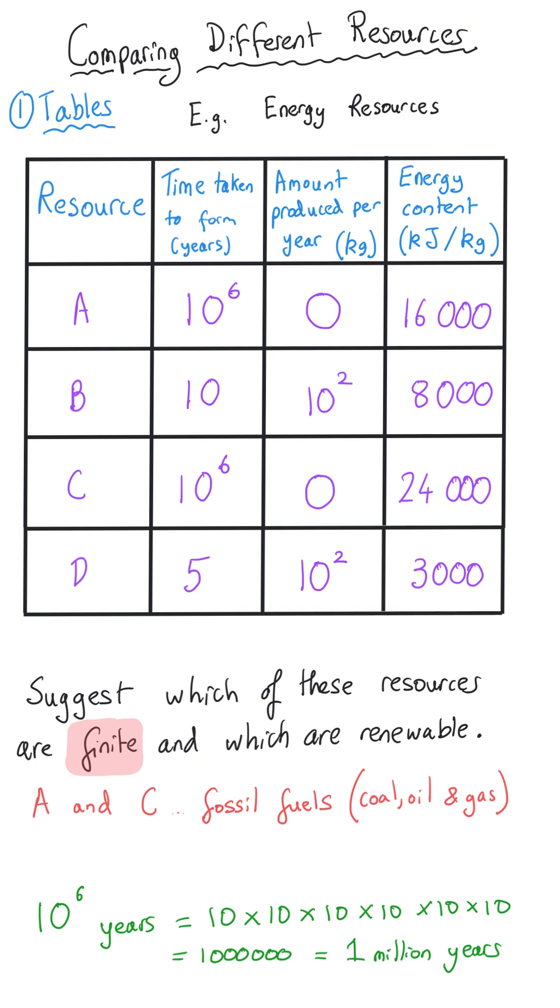And so A and C look like they are the finite resources and B and D look like they would be renewable.